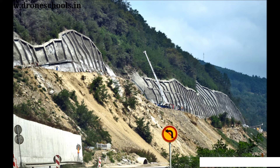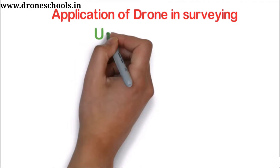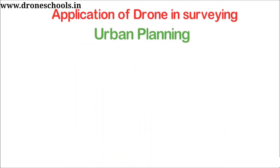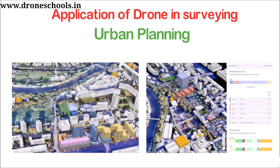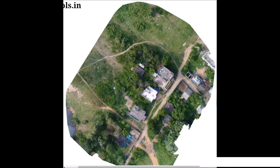In urban planning, high-accuracy surveys are needed for planning and development. In traditional or ground-based methods, it takes more time and more people to do the survey. But by using drones, we can complete the work in very less time and with fewer people. The images produced by the drone allow planners to examine the existing social and environmental conditions of the site and consider the impact of different scenarios.